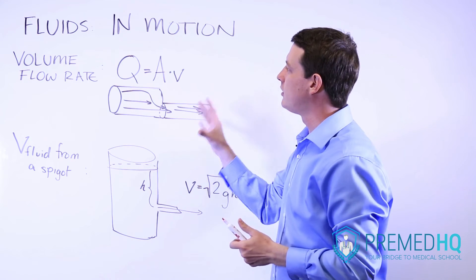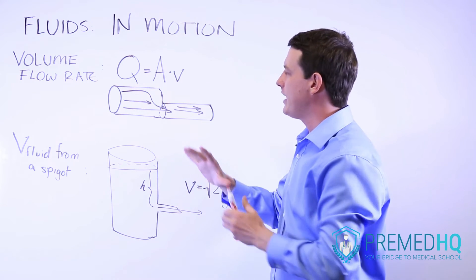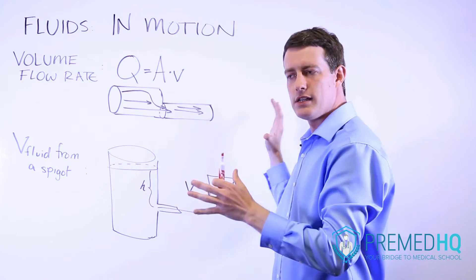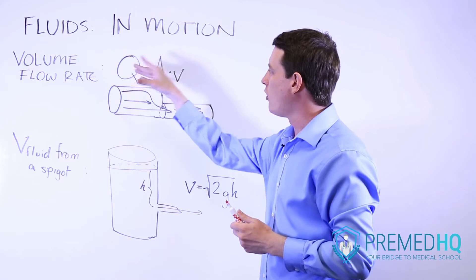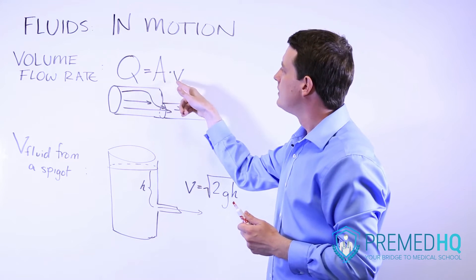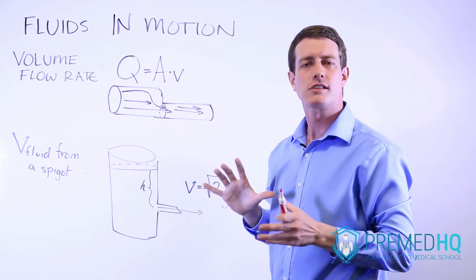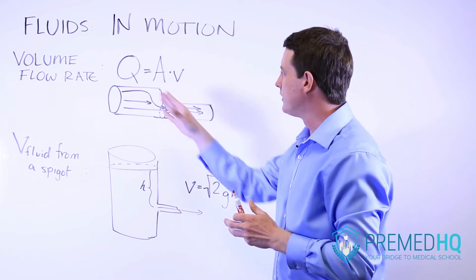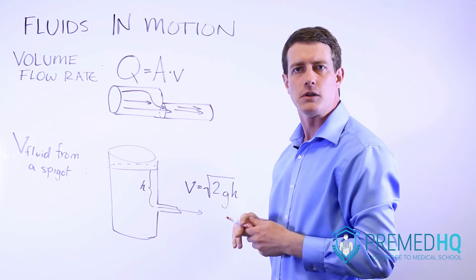So essentially, the volume flow rate says that at any point in a fluid system, the Q, which is the volume flow rate constant, is going to be equal to A times V, where A is the cross-sectional area of the region that it's in, and V is the velocity of the fluid.